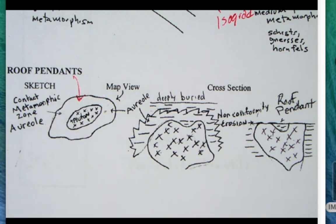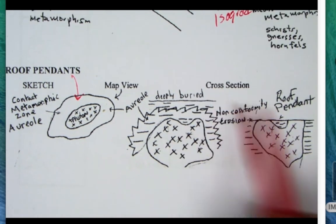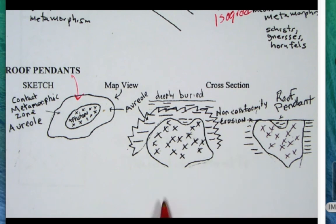Here's a couple of cross sections showing how the pluton would intrude the crust, and the country rock around it would get metamorphosed. That's the metamorphic zone.